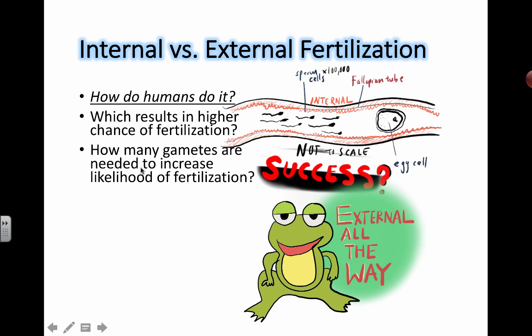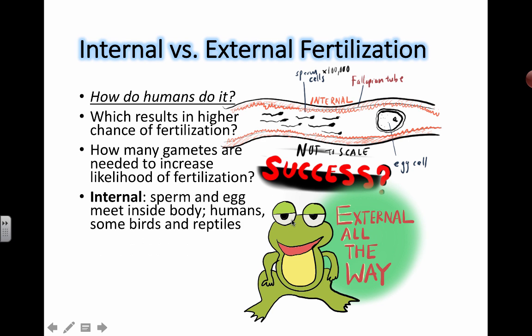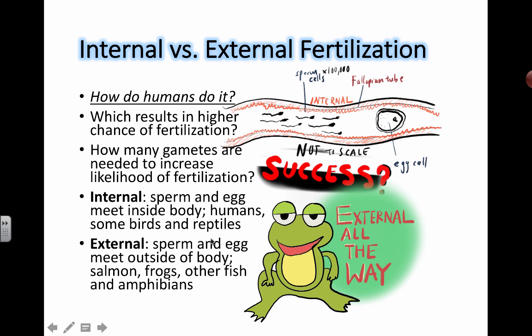So how many gametes are needed to increase the likelihood of fertilization? If it's external, you need a lot more. If it's internal, sperm and egg meet inside the body — humans, some birds, and reptiles. External fertilization means sperm and egg meet outside of the body — salmon, frogs, other fish, and amphibians. It's a pros and cons type of approach to understanding this particular point.